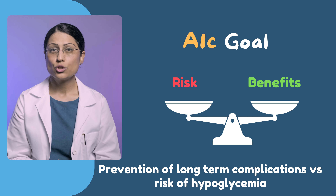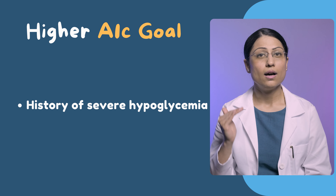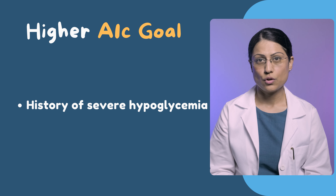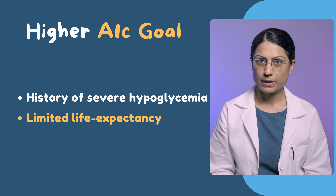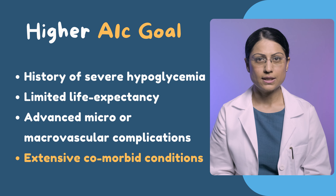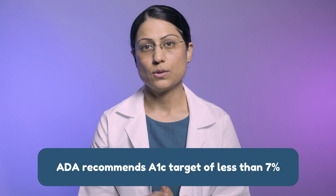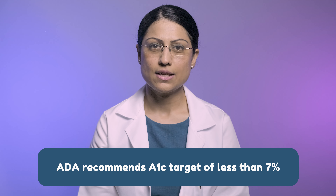A1c goal should be individualized according to the risk and benefit profile for each patient. The benefit of reducing long-term complications should be balanced against the increased risk of hypoglycemia associated with intensive therapy. A higher A1c goal can be chosen for patients with history of severe hypoglycemia, limited life expectancy, advanced micro- or macrovascular complications, or multiple comorbid conditions. The A1c target can range from 6.5 to 7%; the American Diabetes Association recommends an A1c target of less than 7% for non-pregnant adults. Based on ADA recommendation, a 0.5% change in A1c is clinically significant and may require alteration of treatment.